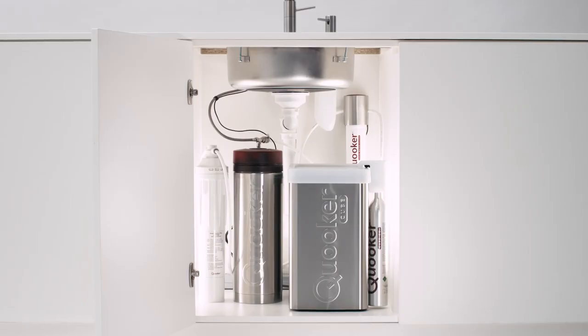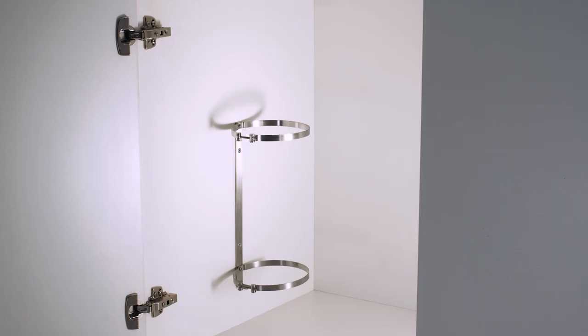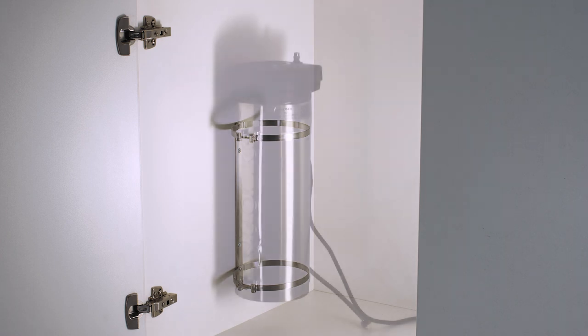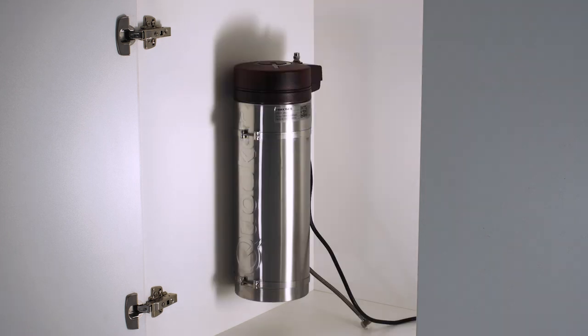The Quooker tank must be fitted in an upright position. If the tank is to be fitted in a cabinet with drawers, an optional mounting bracket can be purchased to suspend the tank from the cabinet wall.